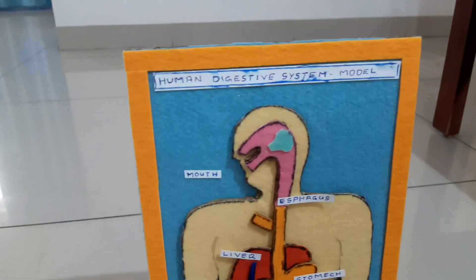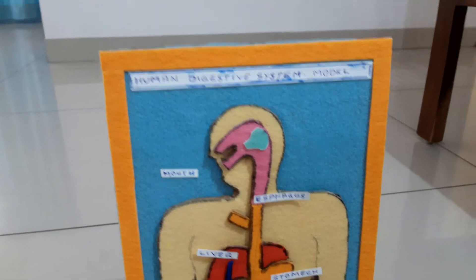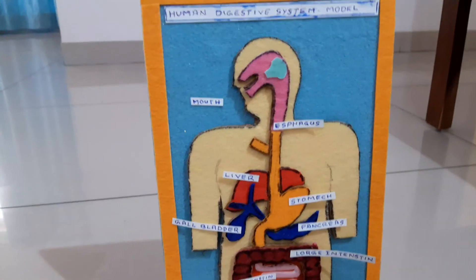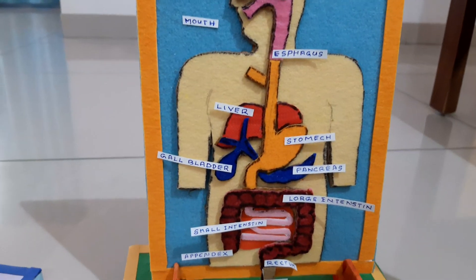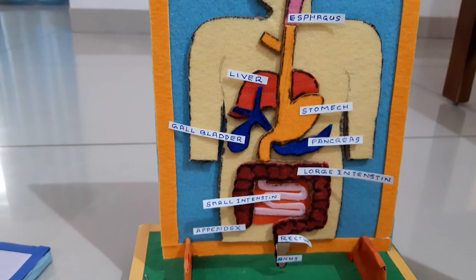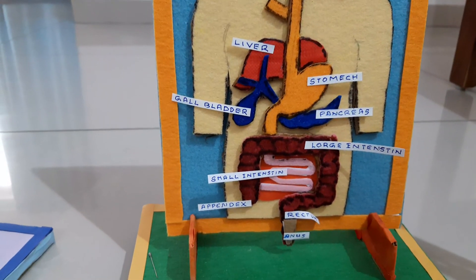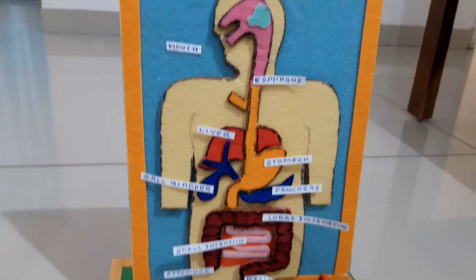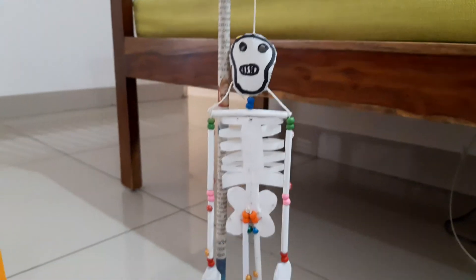And then comes the overall human digestive system model. You can see the mouth, esophagus, liver, stomach, intestines and excretory systems. And here is the skeleton.